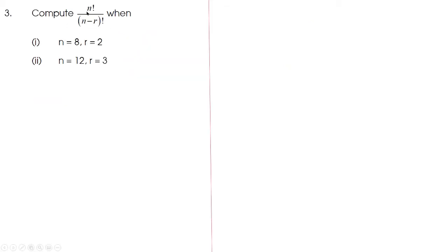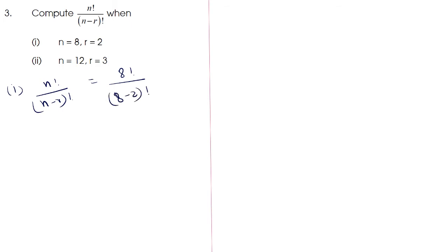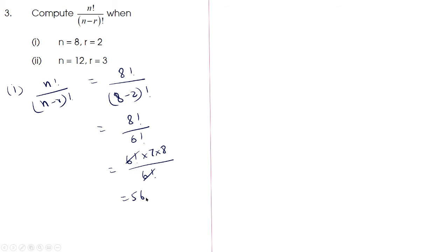Next question: compute n! / (n - r)! for the given values. First subdivision: n = 8, r = 2. So n! / (n - r)! = 8! / (8 - 2)! = 8! / 6!. We can write 8! as 6! × 7 × 8, so 8! / 6! = 7 × 8 = 56. When n = 8 and r = 2, n! / (n - r)! = 56.